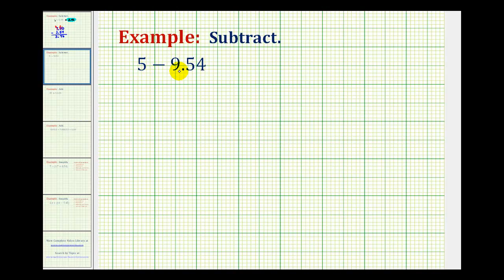I think it will be helpful to write this as an addition problem, and then follow the rules for adding signed numbers. Subtracting a positive 9.54 is equivalent to adding negative 9.54. So we can write this as 5 plus negative 9.54.